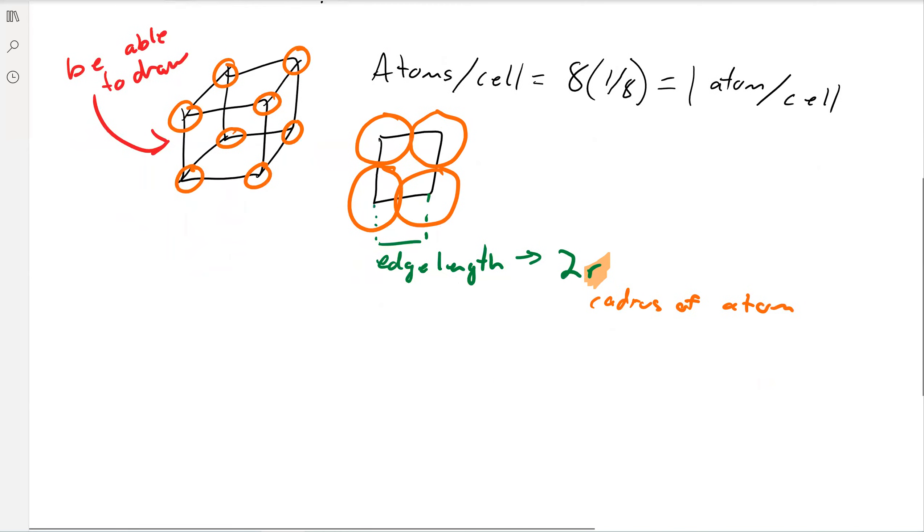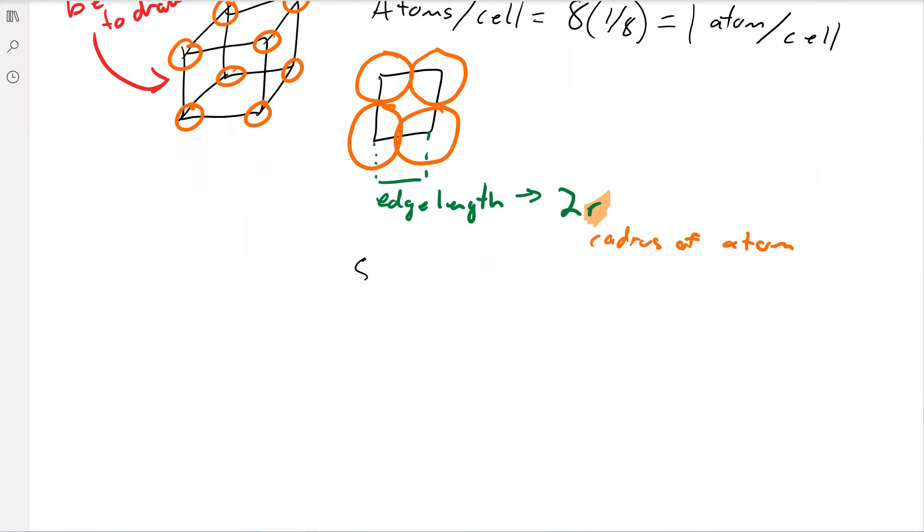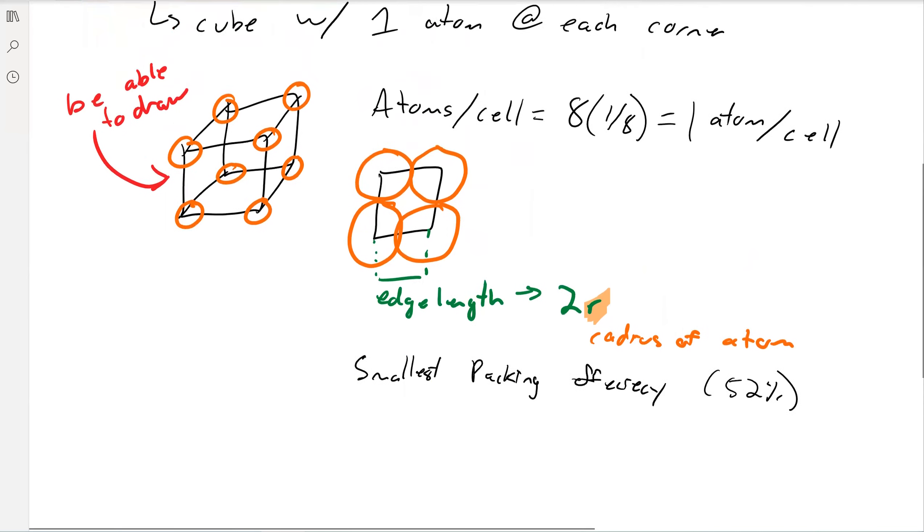Simple cubic is the least packing efficient—it has the smallest packing efficiency. That means there's a lot of empty space in here that's not being used for anything. The actual number is like 52% of the space is occupied. You don't have to know the number, just know that it's the least efficient.